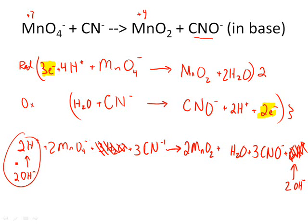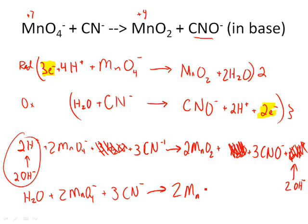So this makes two more waters. And so one of those waters can cancel out this one. So we're going to be left here with one water, and 2 MnO4 minus, and 3 CN minus 1, producing 2 MnO2 plus 3 CNO minus, and 2 OH minus.